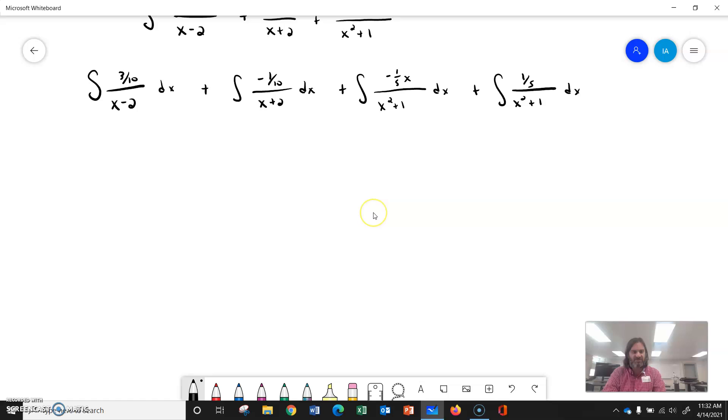So the first two are not too bad. The first two are natural log integrations. So the first one will give me 3 tenths times the natural log of x minus 2.